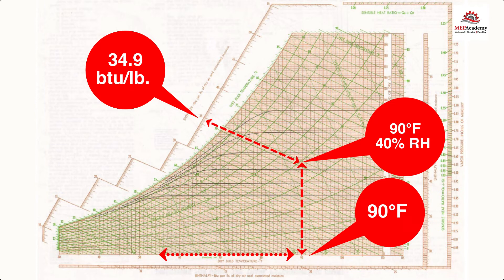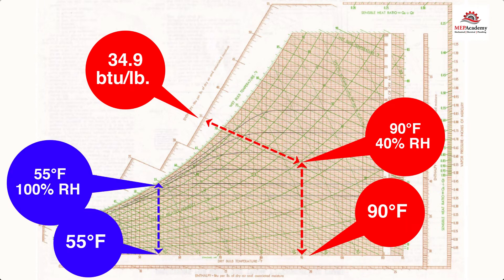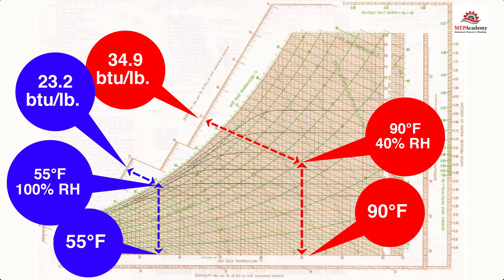Then we plot the leaving air conditions of 55 degrees Fahrenheit and 100% relative humidity. We get an enthalpy of 23.2. 34.9 minus 23.2 gives us an enthalpy of 11.7 BTUs per pound.